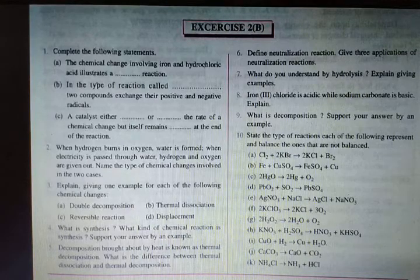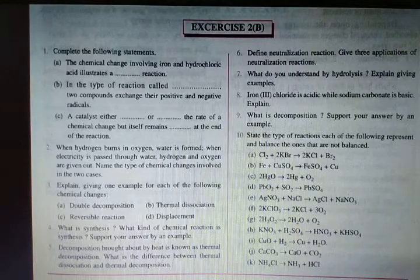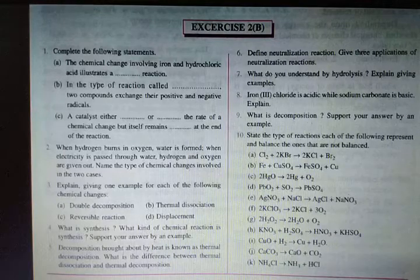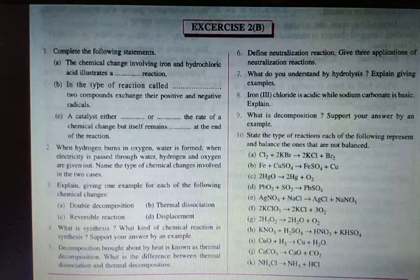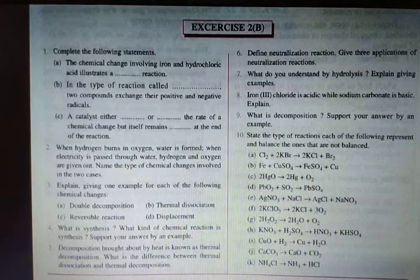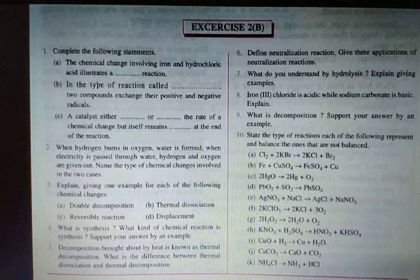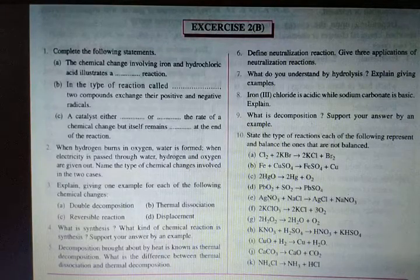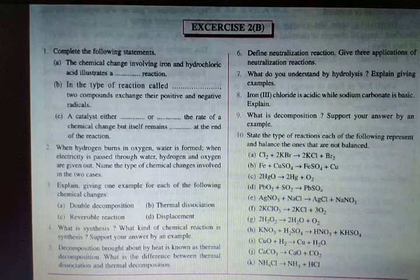Identify and balance these reactions: Cl₂ + KBr — displacement; Fe + CuSO₄ — displacement; HgO → decomposition; PbO₂ + SO₂ — combination; AgNO₃ + NaCl — double displacement or precipitation; KClO₃ → decomposition; H₂O₂ → decomposition; KNO₃ + H₂SO₄ — double displacement; CuO + H₂ → Cu — displacement; CaCO₃ → CaO + CO₂ — decomposition; NH₄Cl → NH₃ + HCl — decomposition. All reactions must be balanced.